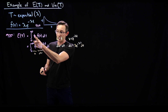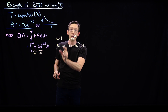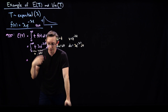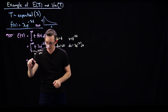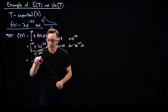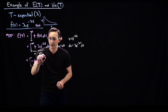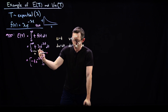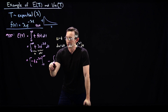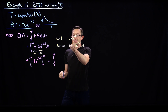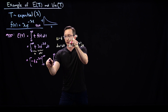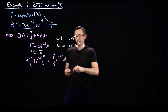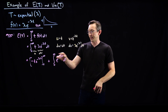Using integration by parts — that is, u·v evaluated at the bounds of integration minus the integral of v·du — this equals u times v, which is minus t·e to the minus lambda t, evaluated at infinity and zero, minus the integral from zero to infinity of v·du, which gives a plus e to the minus lambda t dt. And this is easy to integrate — it's just an exponential.